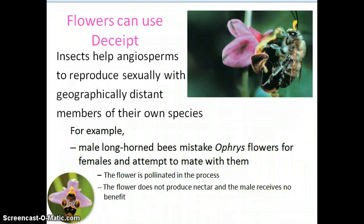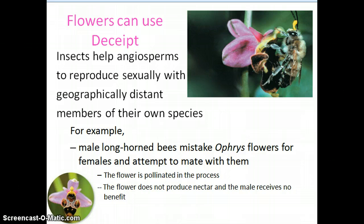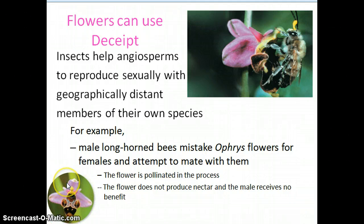In terms of plant behavior, we don't really think of plants as having behavior, but in a sense they do. They have relationships with other organisms, and in this example we can see one of those relationships. In this case it's not a mutualistic one, because this flower — this ophris flower —